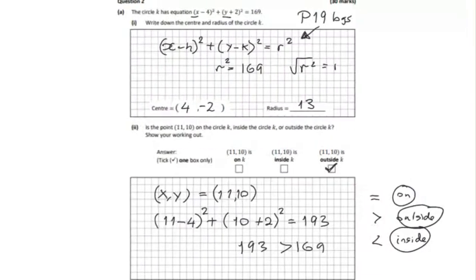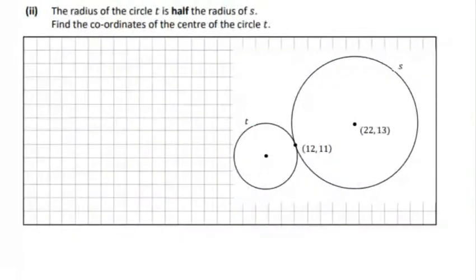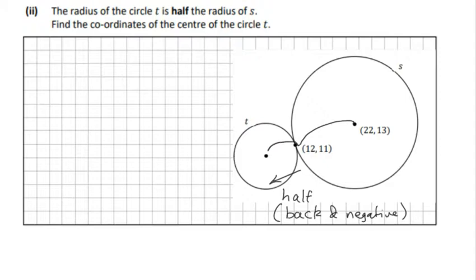If we half that and subtract it on the other side, we could go halfway back. We're going to go half the original, and it's back, therefore it's going to be negative. So we're going to go minus 5 in the x direction and minus 1 in the y direction. So it's going to be 12 minus 5, and 11 minus 1.